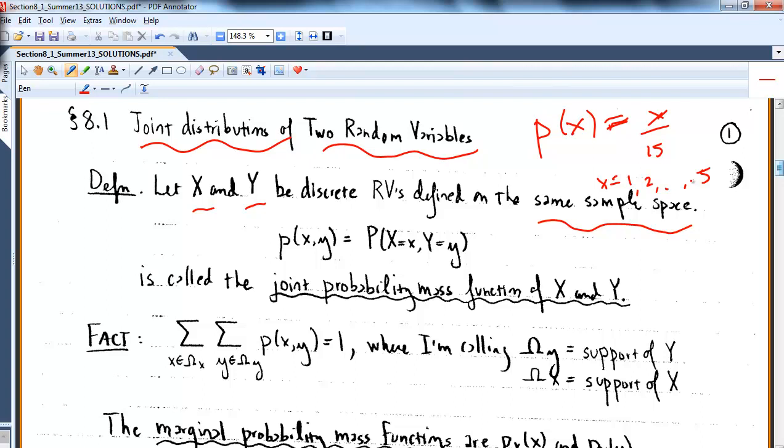In Chapter 4 and 5, we had P of X, which is some distribution, like X over 15 for X equal 1 to up to 5. That should be valid, I believe. Let me check: 1 plus 2 plus 3 plus 4 plus 5 over 15. This is 9, 12, 15. So yay!